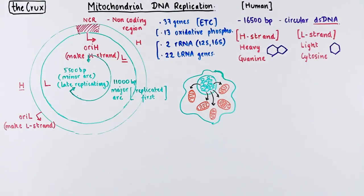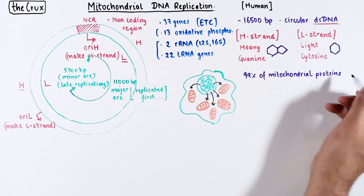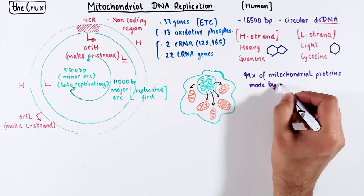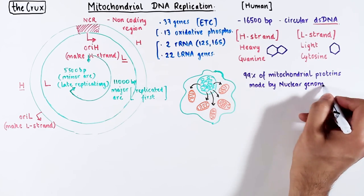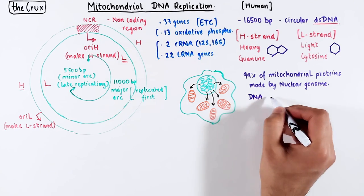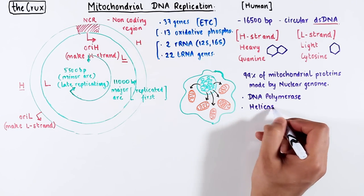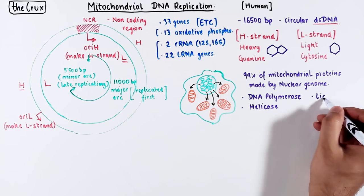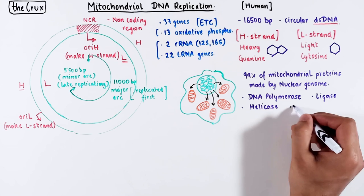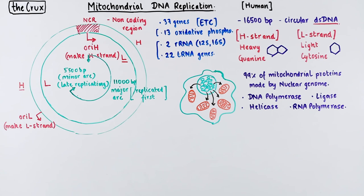In a way, mitochondria is perhaps closer to an obligate parasite than a bacterium — this lazy bacterium has outsourced most of its genes to the nucleus. Relevant to this video, the DNA polymerase, helicase, ligase, RNA polymerase, and pretty much everything, is made by the nucleus.